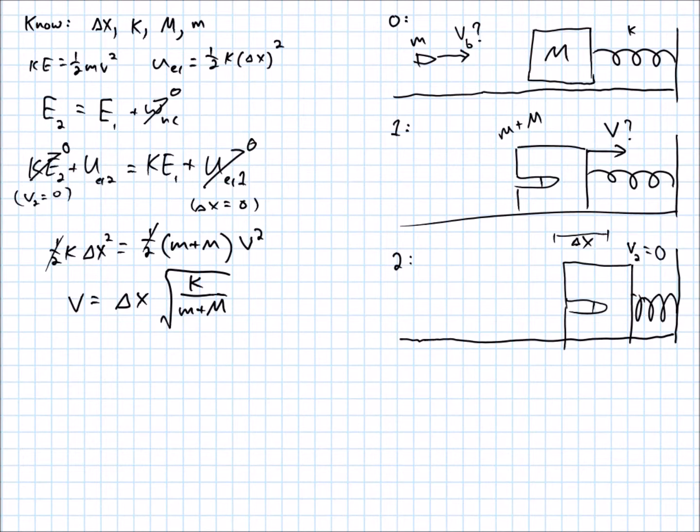So that is the velocity of the two masses moving together. That wasn't the question, though. The question was to find the initial velocity of the bullet up here in situation 0. But now that I know the velocity, the final velocity, and I know there was a collision, I should be able to work backwards using the conservation of momentum to find the velocity that the bullet had.